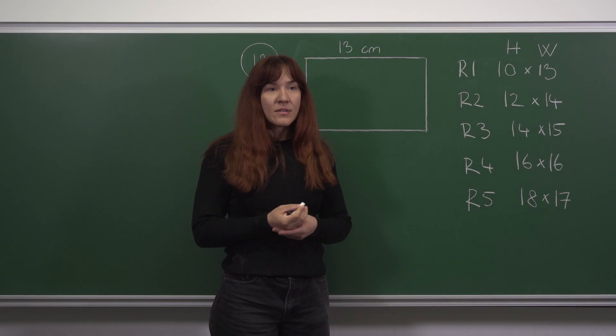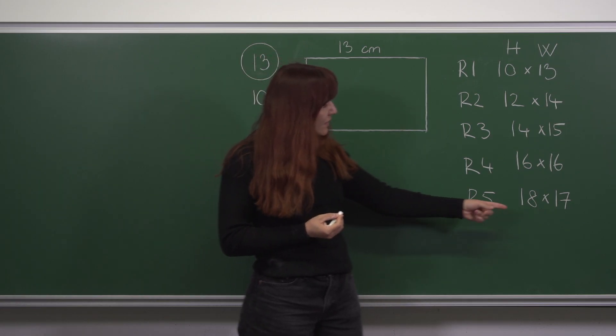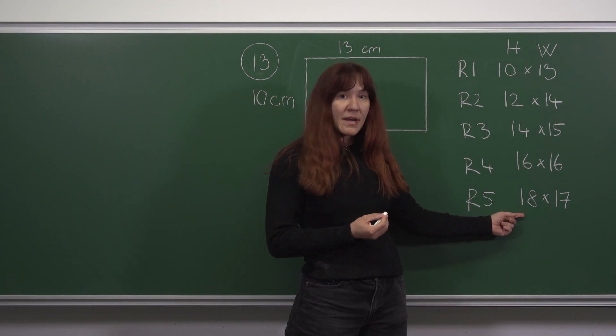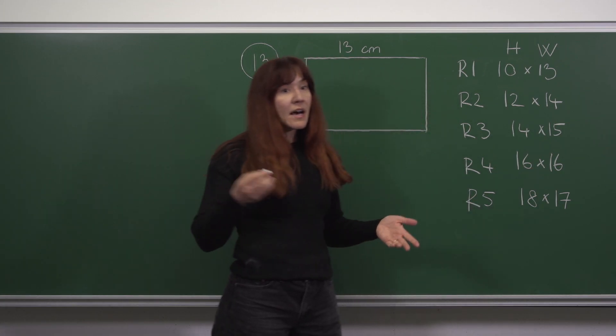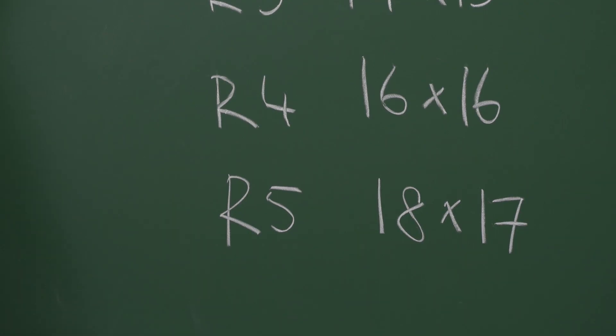I can't list all the rectangles because there are infinitely many but I don't even need to. You can notice that the height of the fifth rectangle is already bigger than the width and the height will increase more each step than the width. So all of the remaining rectangles have a bigger height than width, thus they can't be squares.